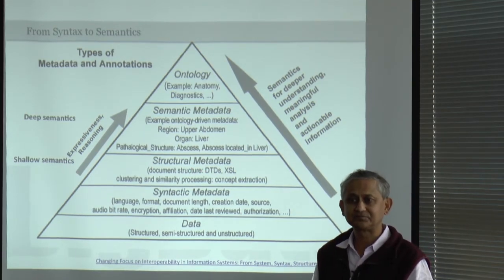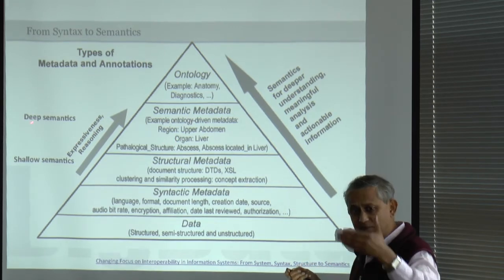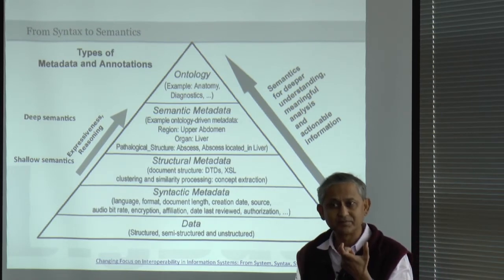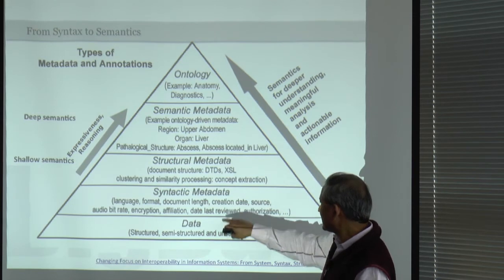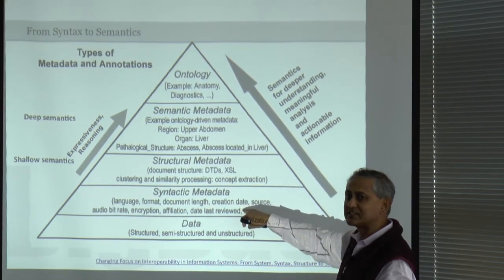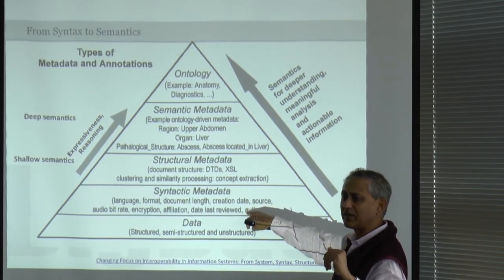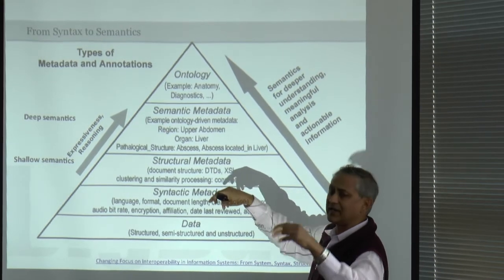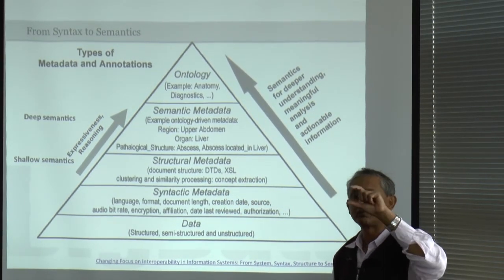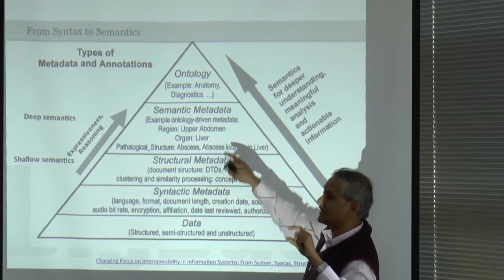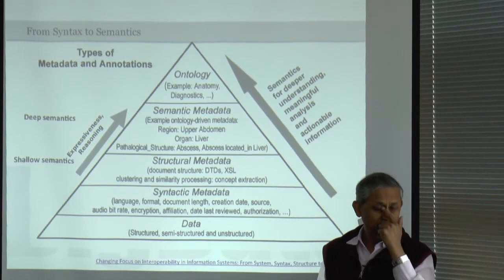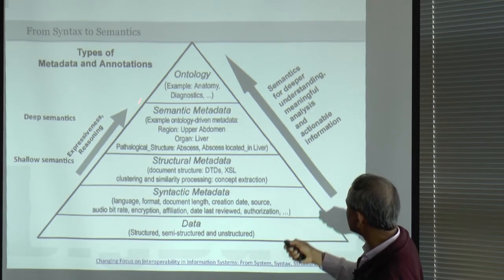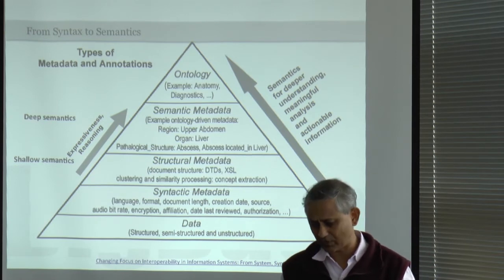Most important is the semantic metadata — it says what the data is. For example: I am looking at an image, and in that image there is a liver organ, and within that liver there is a pathological structure, an abscess located in the liver. That gives meaning. The data simply has pixels; the semantic metadata says what it represents. Ontology gives the framework to capture that, and you go toward higher expressiveness and improved ability to do reasoning as you go up.